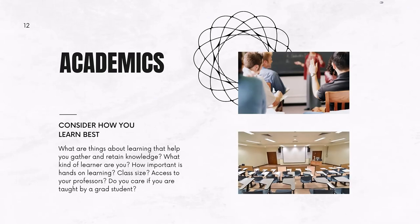Then there's academics — considering how students learn best is really crucial. Whether you're sitting in a classroom of 15 or a lecture hall of 150, understanding how you gather and retain information matters. Are you an auditory learner, a kinesthetic learner, or a visual learner? Do you work well in groups or prefer to learn independently? Do you want all in-person classes or some online? Do you function better in the evening? Do you want a rigid prescribed course of study or would you prefer to dabble and explore? If you're a hands-on learner and go somewhere very theoretical, your experience and learning may suffer.